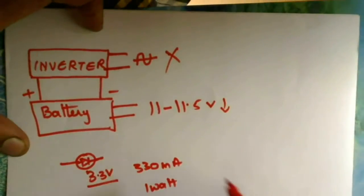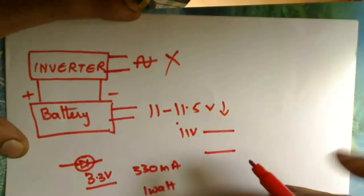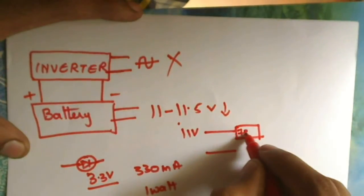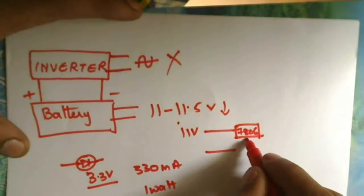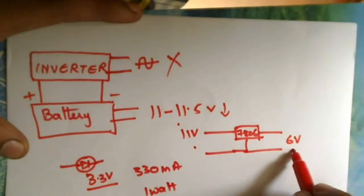And what we're going to do is for this 11V we're going to connect a voltage regulator, say 7806. So for this 7806 the output will be 6V—it will be regulated to 6V.